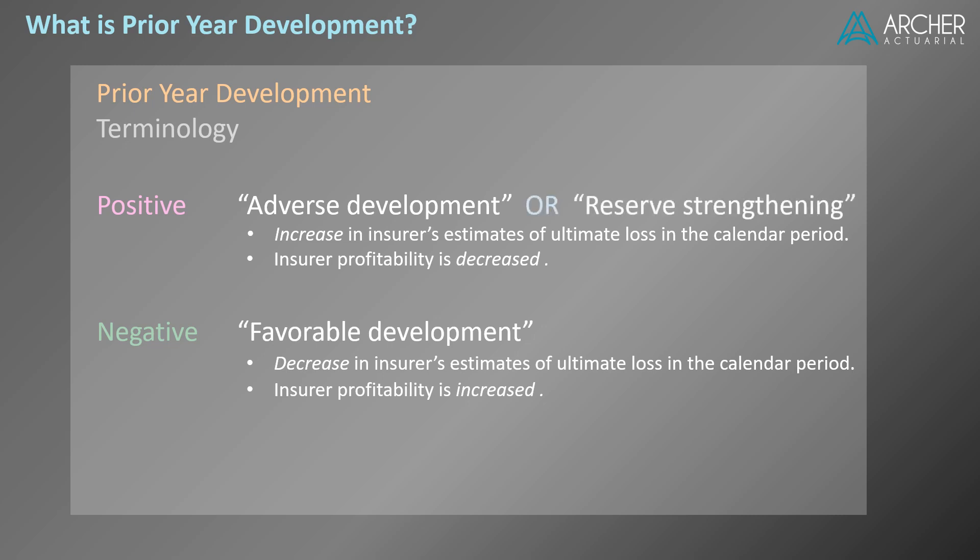Adverse development is sometimes called reserve strengthening. The phrase reserve strengthening may sound like a good thing, but it's just another way of saying that prior estimates of ultimate loss were inadequate and more money is required to satisfy loss reserve liabilities. Similarly, favorable development is sometimes called reserve release, meaning that prior estimates of ultimate loss were redundant and some amount of reserve liabilities can be released, thereby increasing the insurer's profitability. You may be wondering how ultimate losses and loss reserves are related — we'll connect the dots in the next slide.